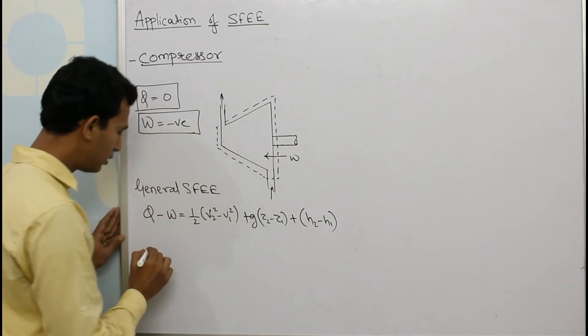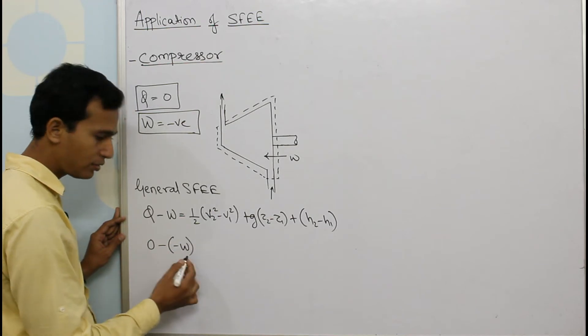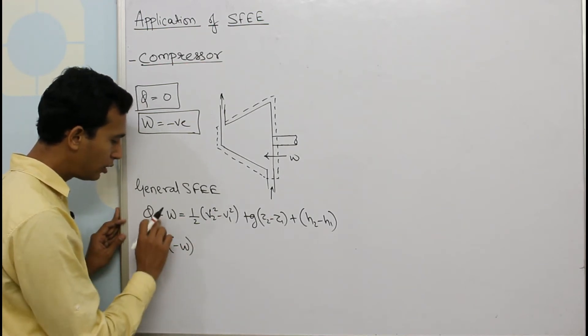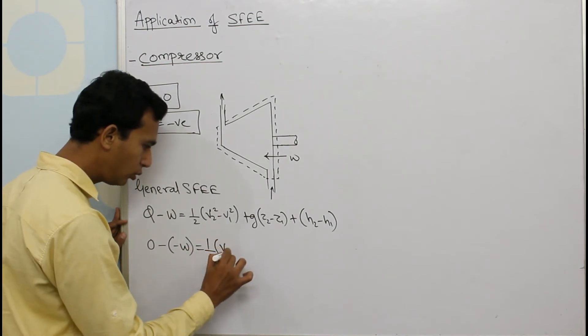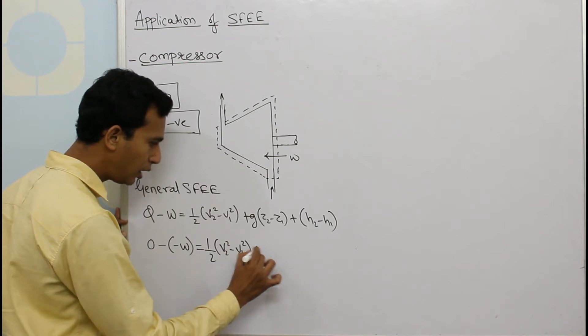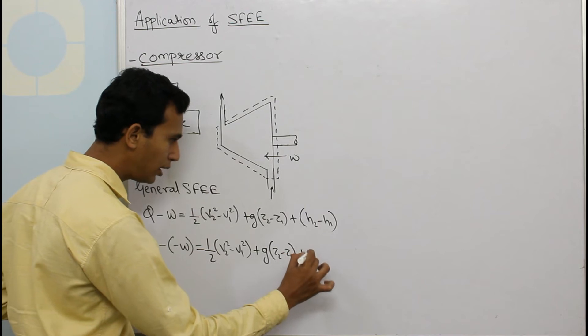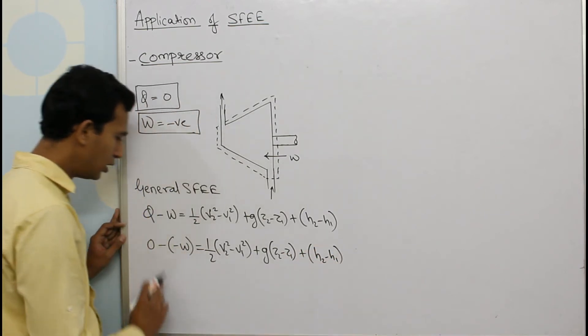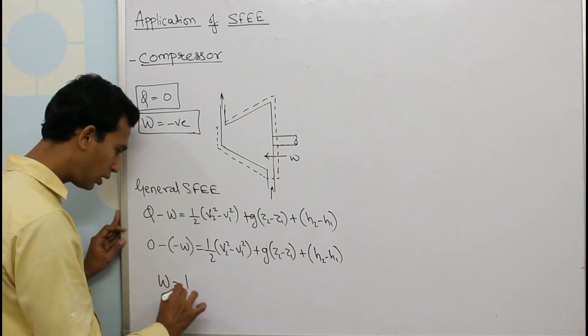Putting these two values in this equation, we get zero minus minus W. I am replacing it because this is negative and this is negative, so the equation equals half V2 squared minus V1 squared plus G into bracket Z2 minus Z1 plus H2 minus H1. So this zero, this becomes positive, so W will be equals to half into bracket V2 squared minus V1 squared plus G into bracket Z2 minus Z1 plus H2 minus H1.